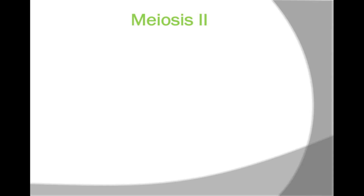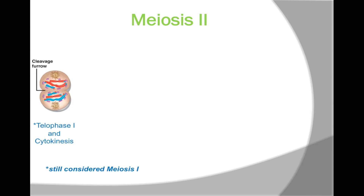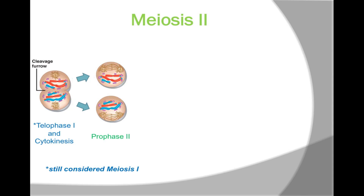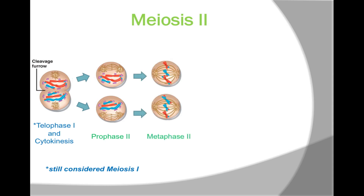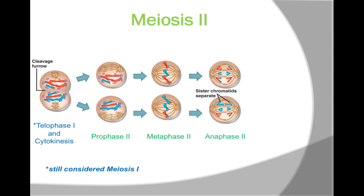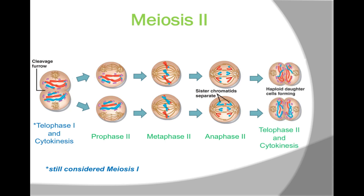Meiosis II. During telophase I and cytokinesis, a set of haploid chromosomes arrive at opposite poles of the cell and a cleavage furrow forms at the middle of the cell. As a result, two non-identical daughter cells are made. In prophase II, the daughter cells' chromosomes condense again and the nuclear envelope breaks down. Remember that meiosis II starts with a haploid cell. Metaphase II has the chromosomes aligned on the metaphase plate, with the kinetochores of the sister chromatids of each chromosome pointing toward opposite poles. In anaphase II, the centromeres of sister chromatids finally separate, and the sister chromatids of each pair — now individual daughter chromosomes — move toward opposite poles of the cell. In telophase II, nuclei form at the cell poles and cytokinesis occurs at the same time. There are now four daughter cells, each with the haploid number of chromosomes.